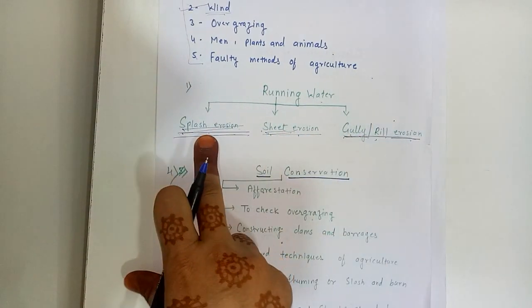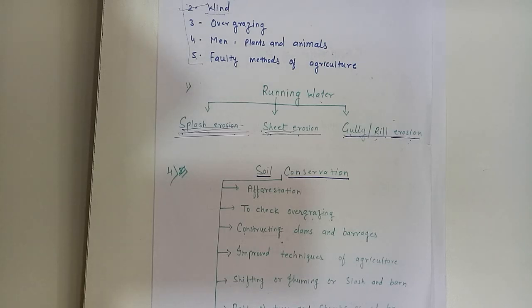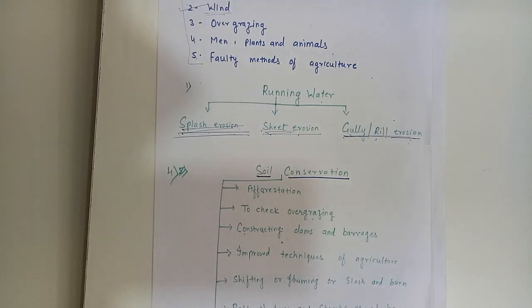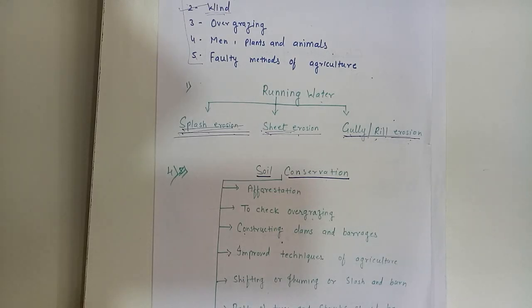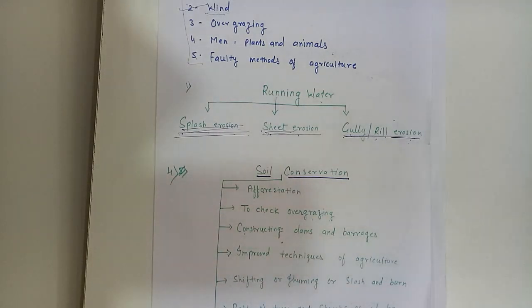Splash erosion is where soil is pulverized — we can say crushed — by the impact of heavy raindrops and hailstones, as in the case of convectional rainfall. Sheet erosion is whereby due to heavy rains, a surface film of water carries away the even surface layer of the topsoil as it moves, taking these soil particles along. So it is called sheet erosion.